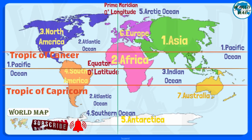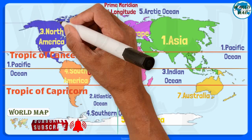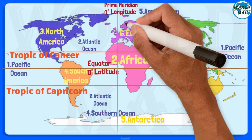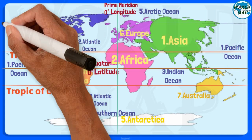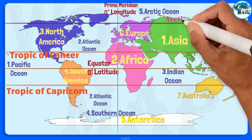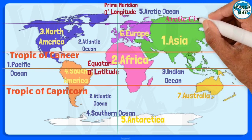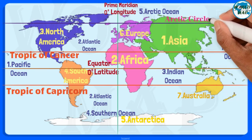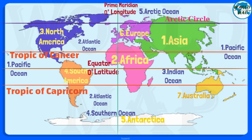Arctic Circle. The Arctic Circle is an imaginary line that encircles the Earth at a latitude of 66 degrees 33 minutes north. It is one of the two polar circles and one of the five major circles of latitude.